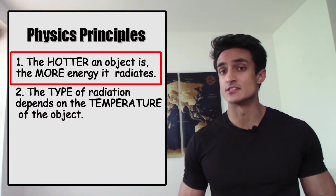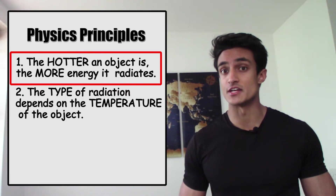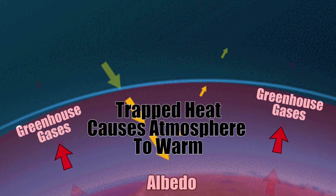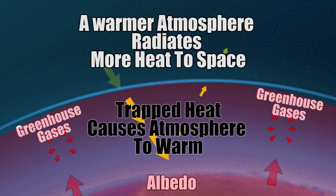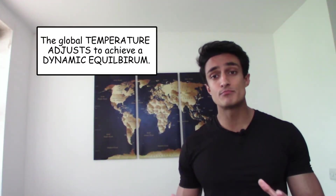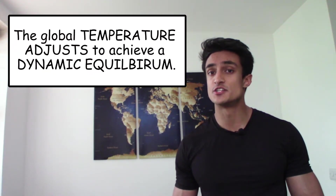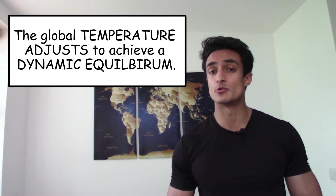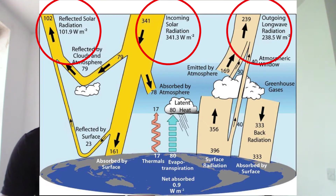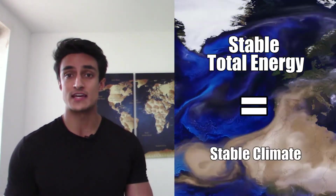And if we remember our basic physics principles, we know that hotter things radiate and lose more energy. This means that the greenhouse effect causes the atmosphere to warm up until it reaches a temperature warm enough to radiate enough heat into space to equal the energy coming in. In other words, the temperature of the atmosphere adjusts to ensure that the amount of energy leaving equals the amount coming in. As long as there are no changes in the energy received from the Sun, the albedo, or the greenhouse effect, the total amount of energy in the climate system, and therefore the climate itself, will remain stable.